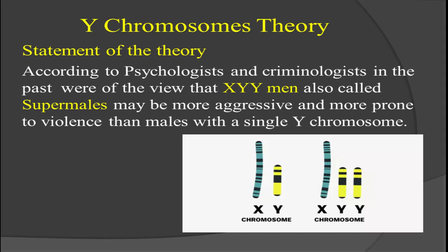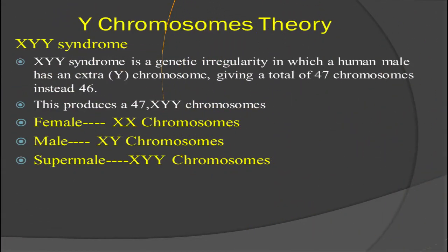That was the statement of the theory. To understand this statement better, let's look at what XYY syndrome is. XYY syndrome is a genetic irregularity in which a human male has an extra Y chromosome, giving a total of 47 chromosomes instead of the normal 46. A syndrome, as you know, refers to characteristics of abnormalities and disease. So XYY syndrome is not a normal thing — it is a genetic irregularity and an abnormality.